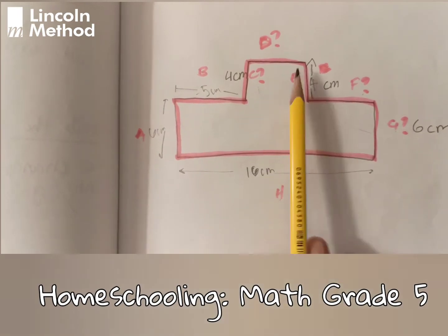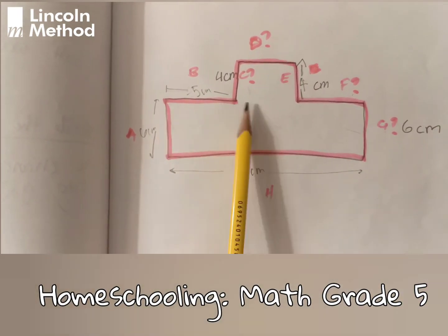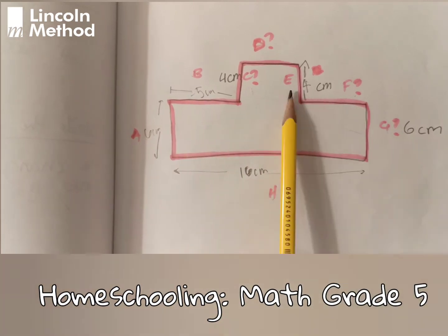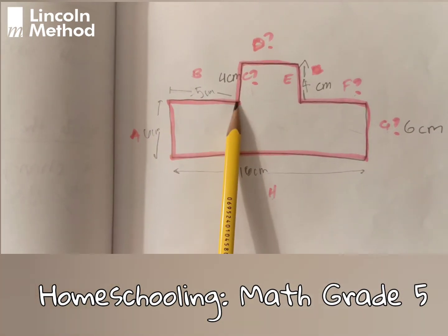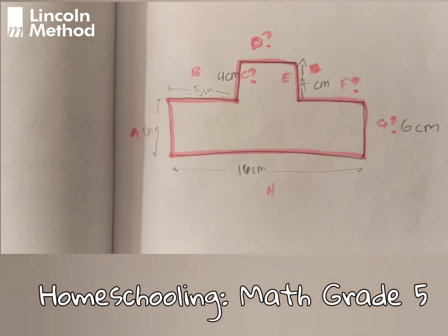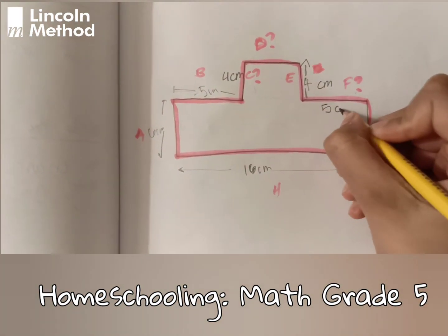Now we're going to solve F. We know that this is 5 cm, so why wouldn't F be 5 cm too? Because this is the same length and this is also the same length. So F is going to be 5 cm.